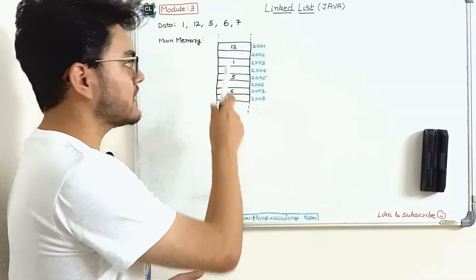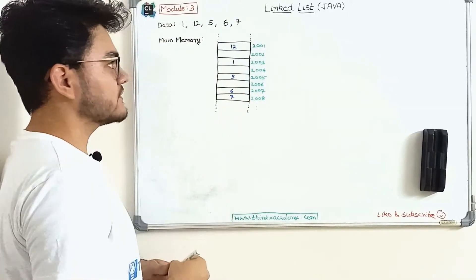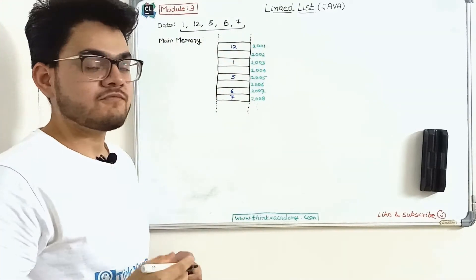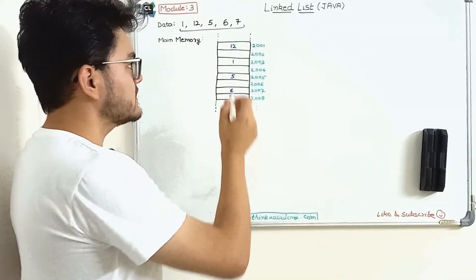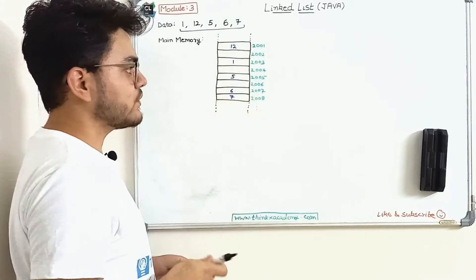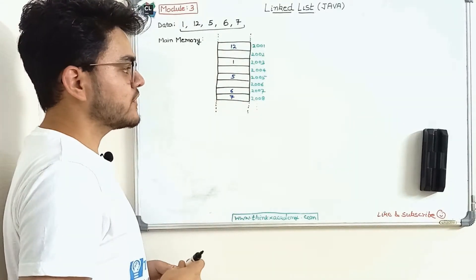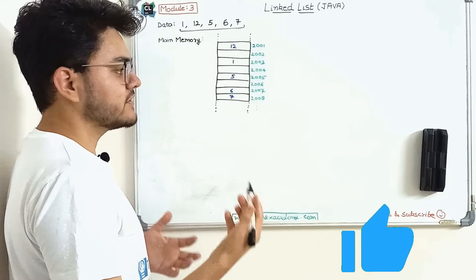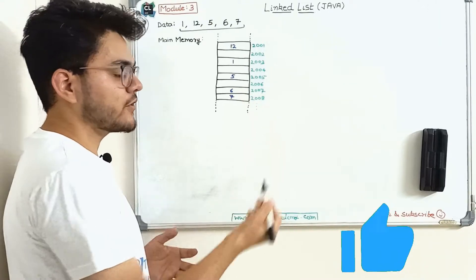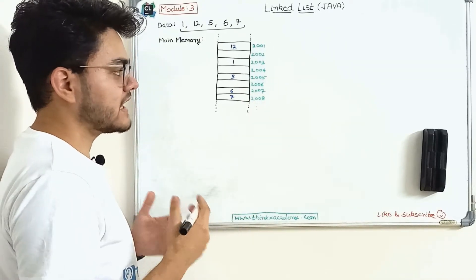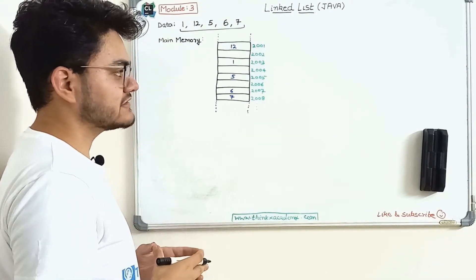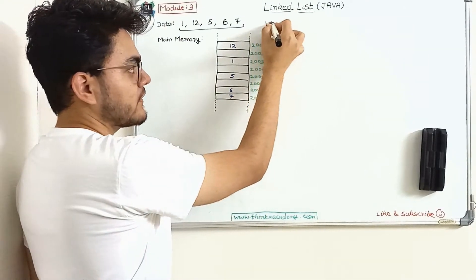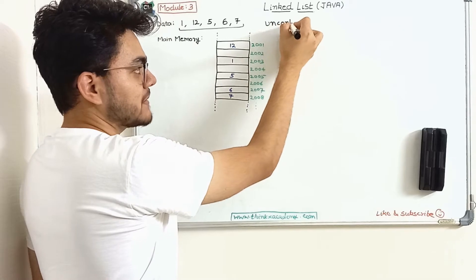We are given some data — one, twelve, five, six, and seven. This data is what we want to allocate in memory. We have studied about arrays, and arrays allocate data in a continuous manner, but that has some disadvantages. Now we're going to study LinkedList, which stores the data in an uncontinuous fashion inside the main memory.